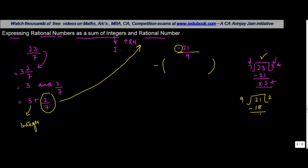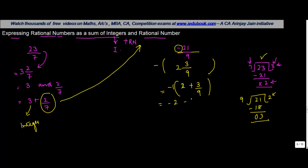Subtract 18 from 21 — the remainder is 3. So we can write 21 by 9 as the quotient 2, remainder 3, and divisor 9 — giving us 2 and 3 upon 9. With the negative sign outside, it becomes minus 2 plus 3 upon 9. Now if you apply the minus sign into these two, you get minus 2 minus 3 upon 9.